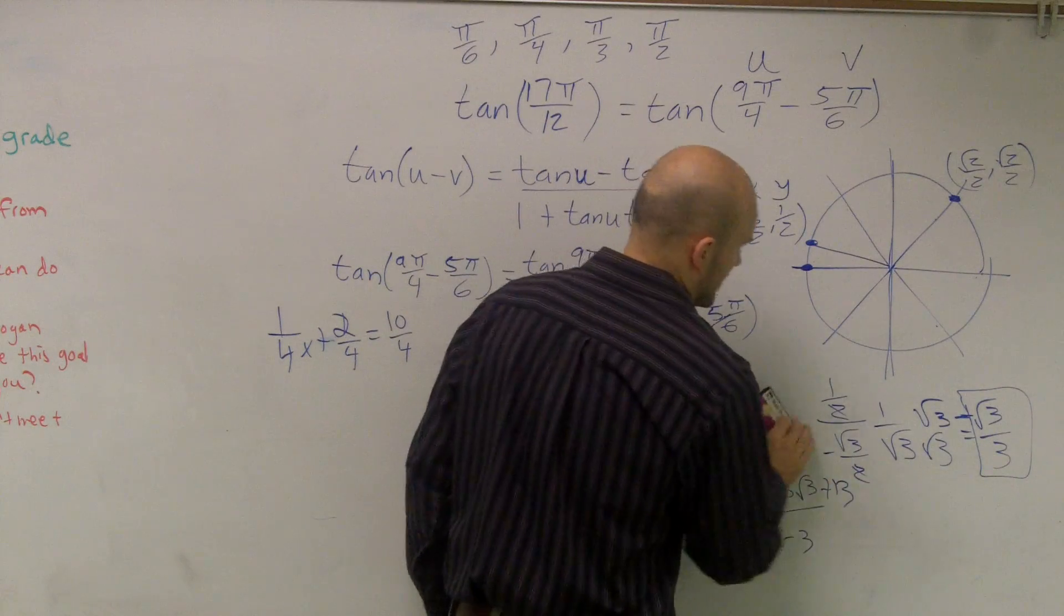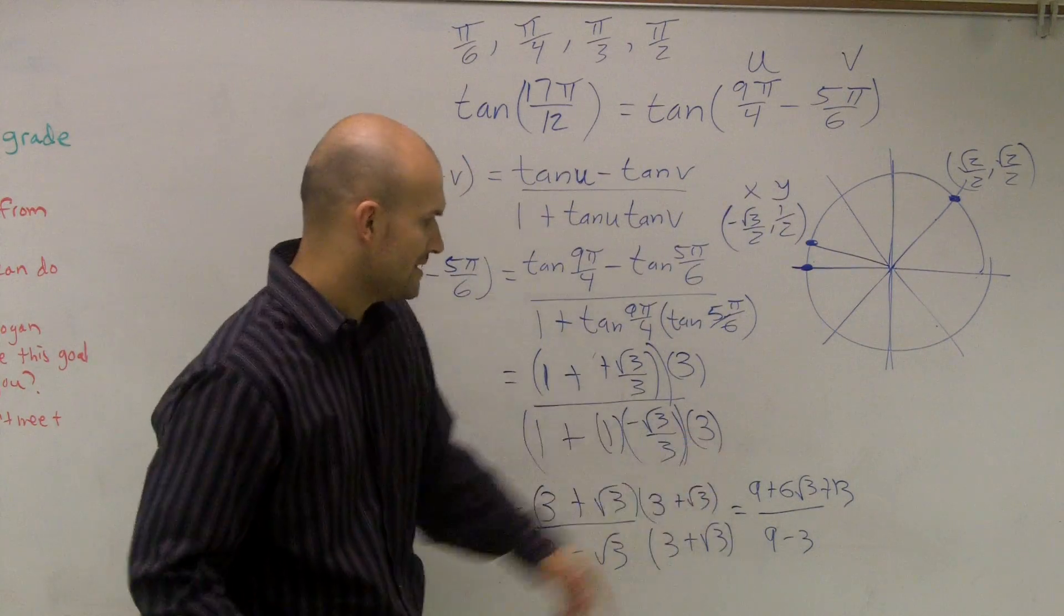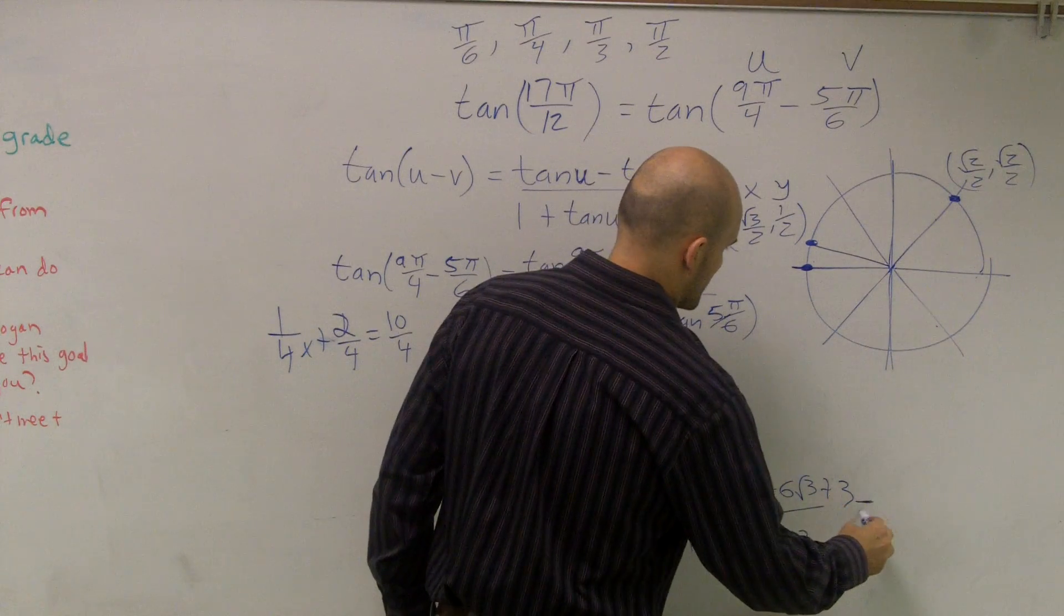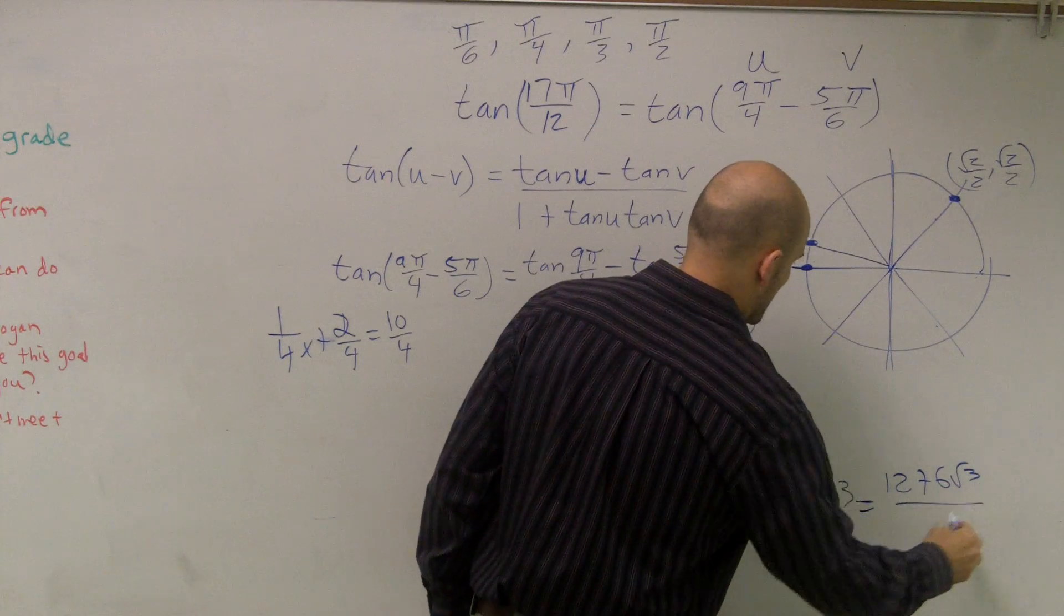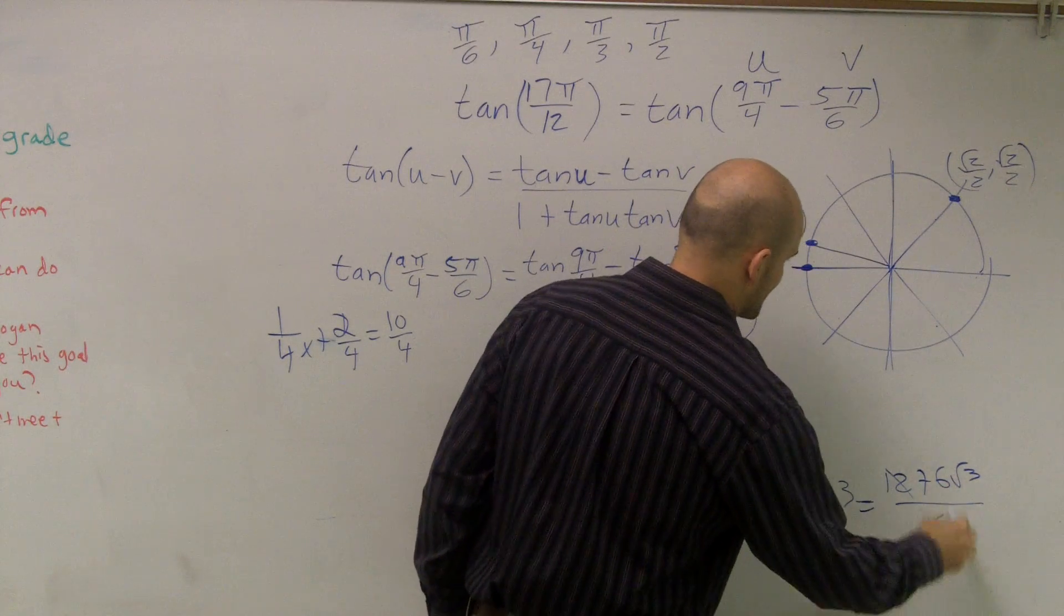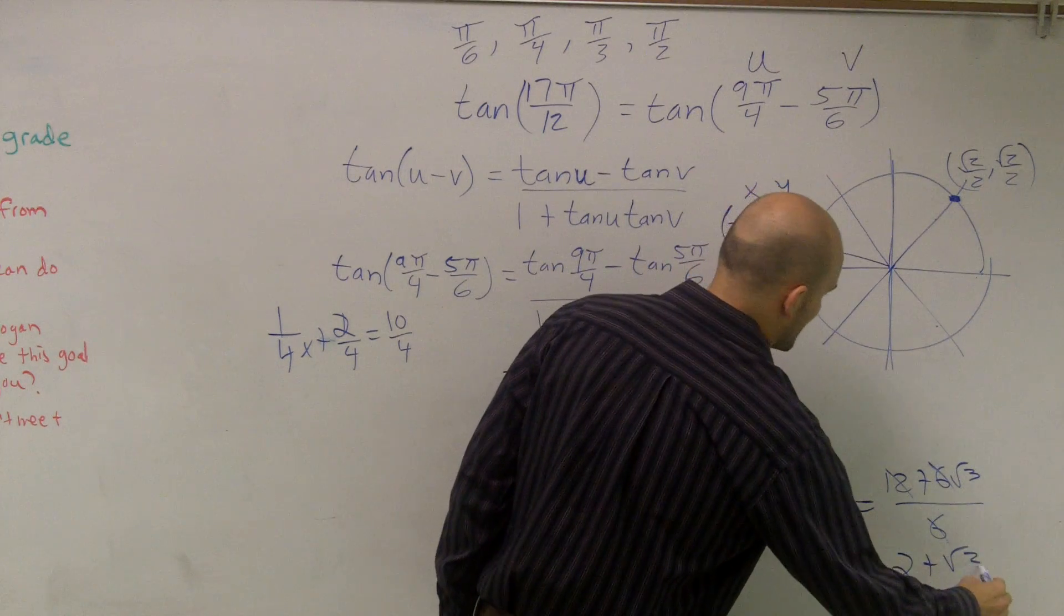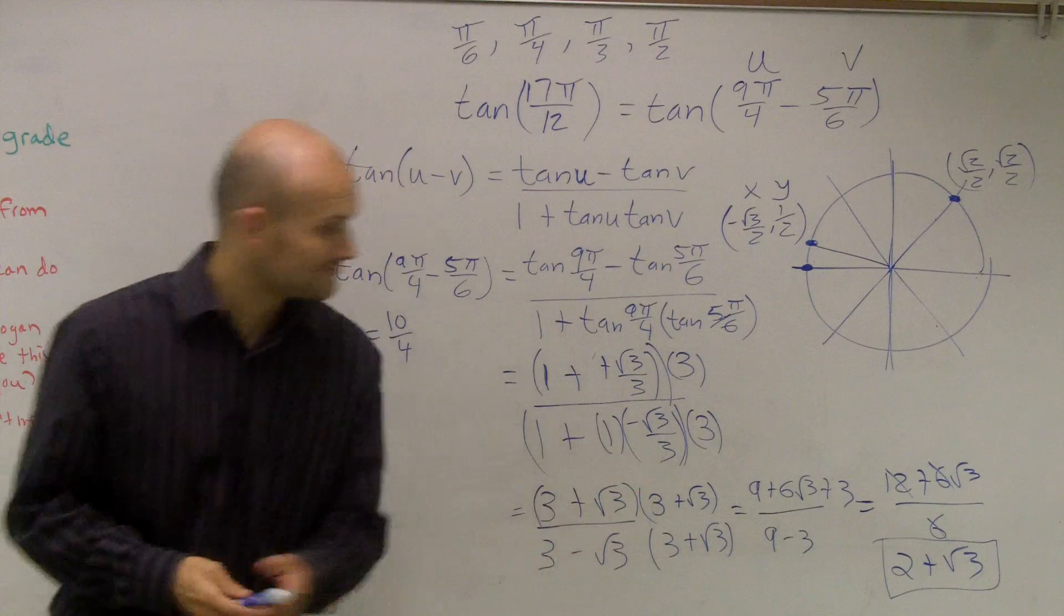Let's get this work out of the way. So now when I go and combine these, what I get is 12 plus 6√3 over 6. What I end up with is 2 plus √3. And that's it.